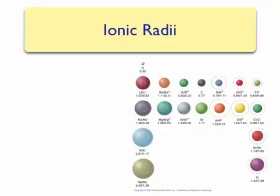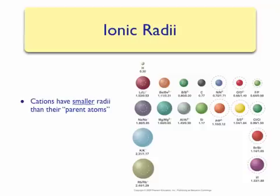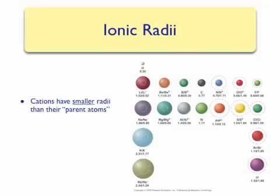When atoms form ions, their radius changes. Cations tend to have smaller radii than their parent atoms. Looking at the chart, if you examine all of the metals — which are further to the left — the small dashed circle indicates how the size of the cation changes as they lose electrons. All cations have smaller radii than their parent atoms, since the loss of a valence electron increases the effective nuclear charge, which allows the electron cloud to be pulled in closer to the nucleus of the atom.